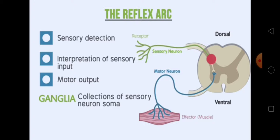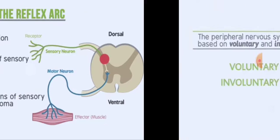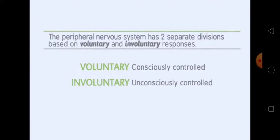Now, what about ganglia? Ganglia is the collection of the sensory neuron soma. It is the collection of sensory neuron soma.